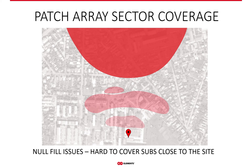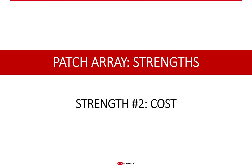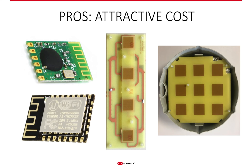Another strength of patch arrays is their cost — simply put, they are cheaper to manufacture. The development of PCB technology started at the beginning of the 20th century by German inventor Albert Hansen, with early experiments by Thomas Edison. Since then it has come a long way and is today one of the cheapest technologies for circuit and antenna manufacturing, especially at low frequencies — partly because virtually all other electronics are based on this technology, driving tremendous pressure to invent cheap and sustainable PCB manufacturing methods.